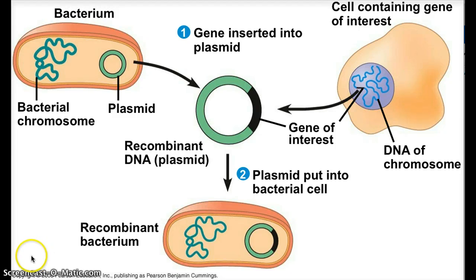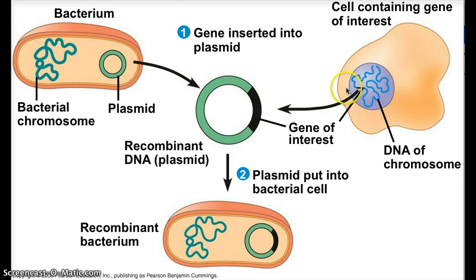Here's an overview of genetic engineering. In this example, we're taking a gene of interest from a eukaryotic cell. We're going to use the example of taking the gene that produces insulin, because this is actually done in this manner. So we're going to say that this is a human cell that is being harvested, growing in a little dish in culture. This is the gene of interest — the gene that produces insulin.